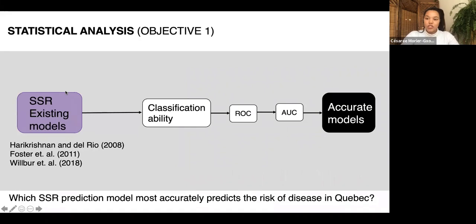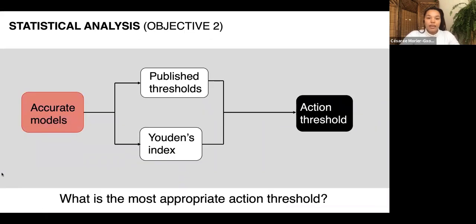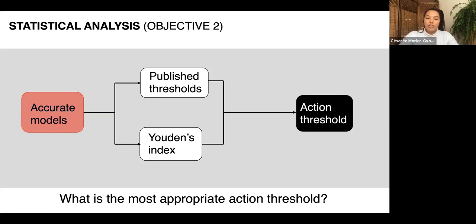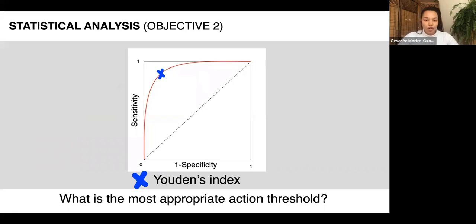After the ROC analysis identifies the best models for Quebec, I'll address my second objective: identifying appropriate action thresholds — the predicted value at which fungicide use should be recommended. For published models, authors have often specified thresholds, which I'll check for appropriateness under our conditions. I can also identify my own optimal threshold using Youden's Index, which is the point on the ROC curve that maximizes both sensitivity and specificity.